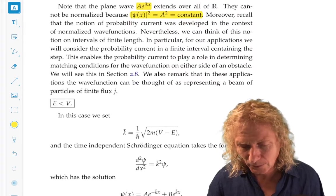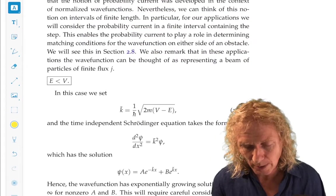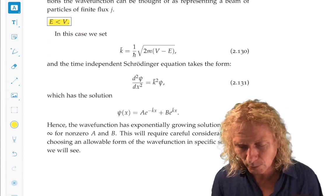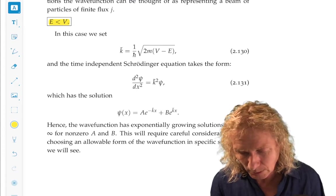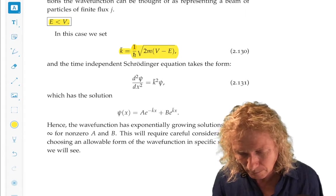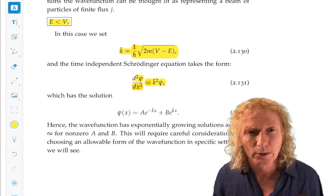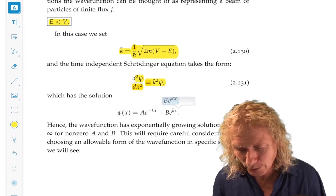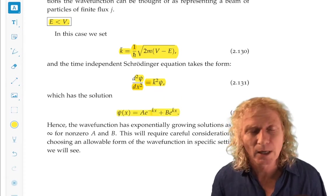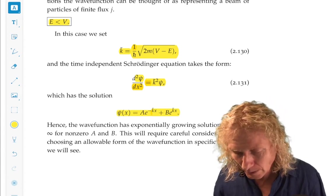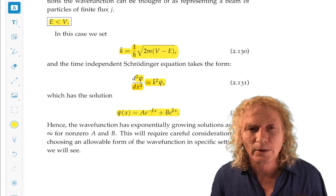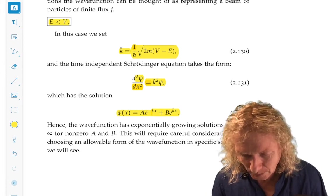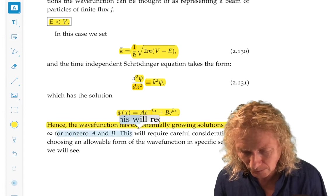That's one case. Now, what about when the total energy is smaller than V? The case that's not classically possible. Well, in this case, we're going to set K tilde equal to this quantity. The time independent Schrödinger equation becomes this. And this has solutions that are exponentially growing. They're not e to the ikx and e to the minus ikx. They're e to the k tilde x and e to the minus k tilde x. So this is an important point that we're going to need to consider carefully.